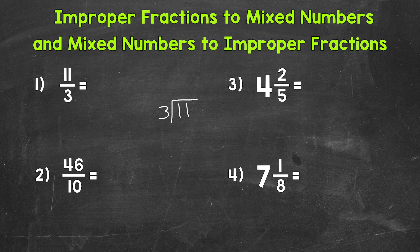So how many whole groups of 3 out of 11? Well, 3. That gets us to 9. That's going to be the whole number portion of our mixed number. So 3 whole groups of 3 out of 11. 3 times 3 is 9.